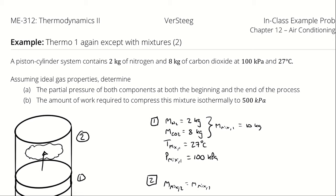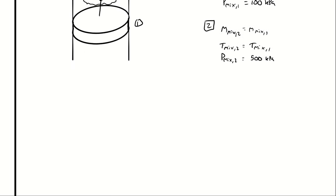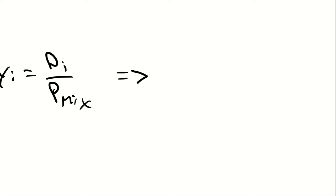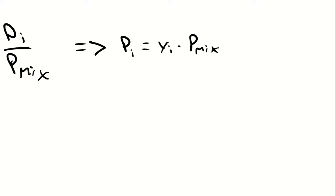Because we have ideal gases and we're modeling this using Dalton's law, the molar fraction equals the proportion of partial pressure of the substance to the pressure of the mixture. That means the partial pressure is the molar fraction of that substance multiplied by the mixture pressure. Since the molar fraction is the same at state 1 and state 2, I just multiply each molar fraction by 100 kPa for state 1 and by 500 kPa for state 2.